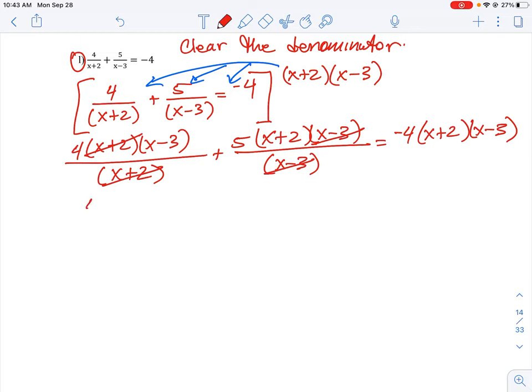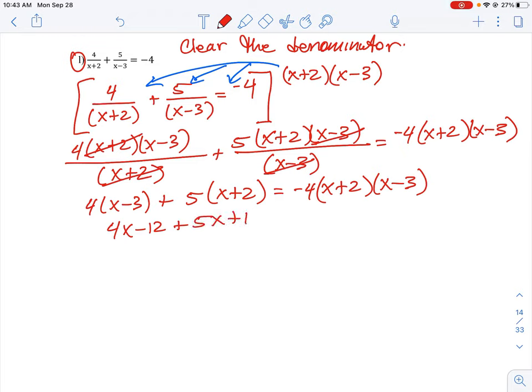Okay, so let's just break this down. So we're going to have 4 times x minus 3 plus 5 times x plus 2 is equal to negative 4 times x plus 2 times x minus 3. Okay, so for us to solve this, we need to now expand and collect like terms. So this is going to be 4x minus 12 plus 5x plus 10 is equal to negative 4.